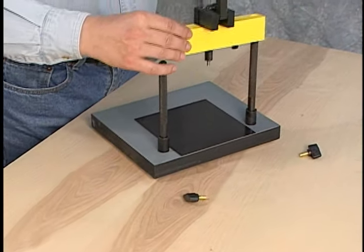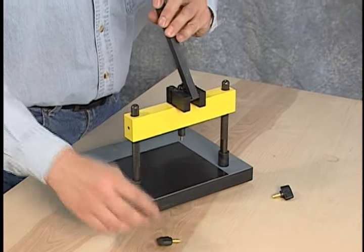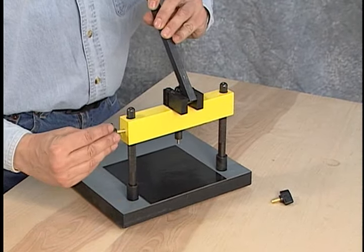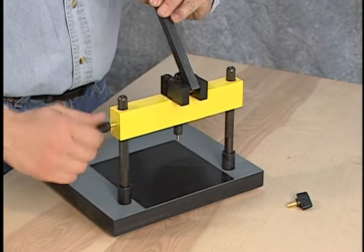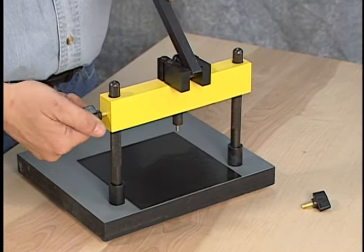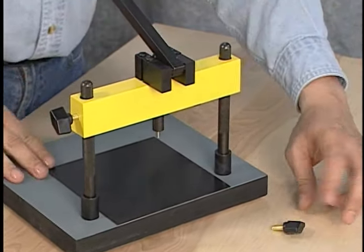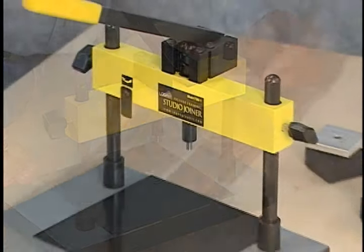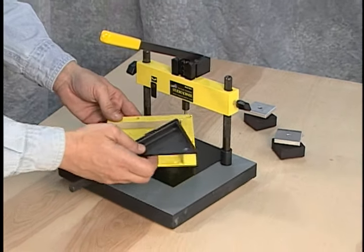Next, install the lever assembly onto the support rods and affix with the large knobs provided. The studio joiner is now ready for use.